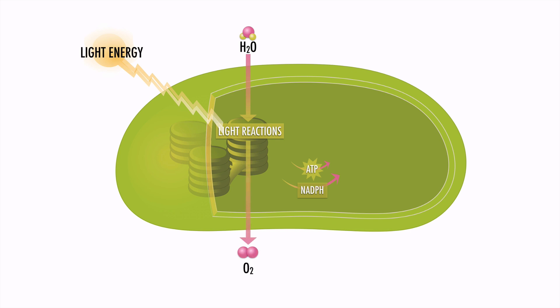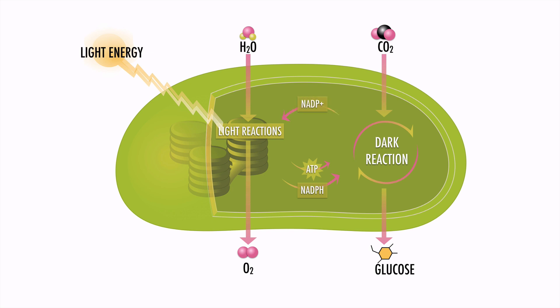The ATP and NADPH are used in the dark reaction, which takes carbon dioxide and converts it into glucose. The NADP+ and ADP produced can be recharged, somewhat like a battery, back at the light reaction in the thylakoid disc.